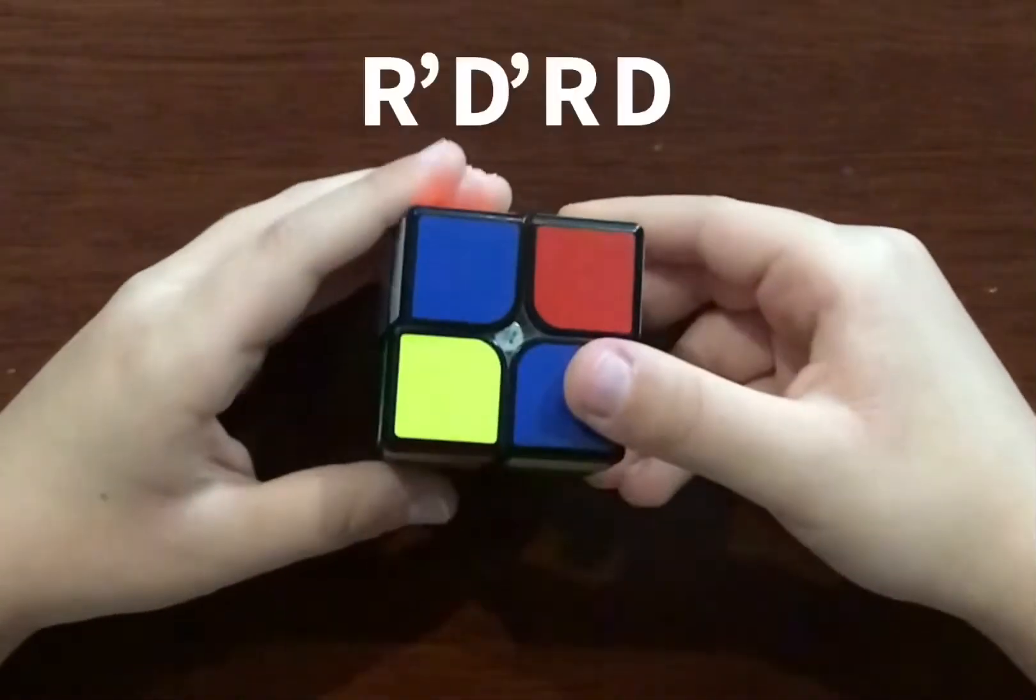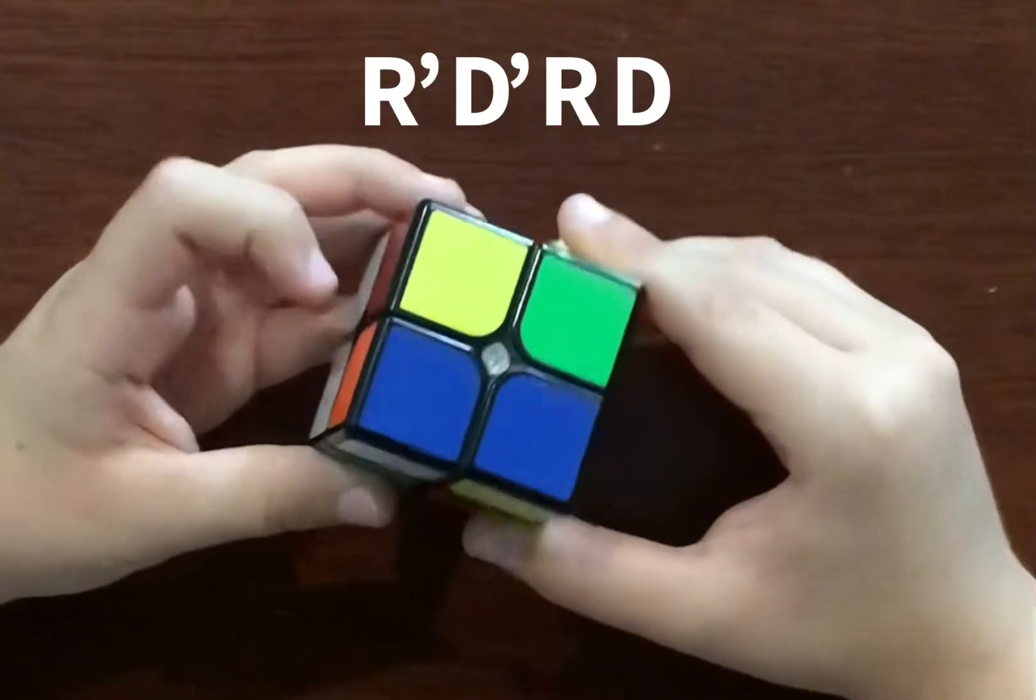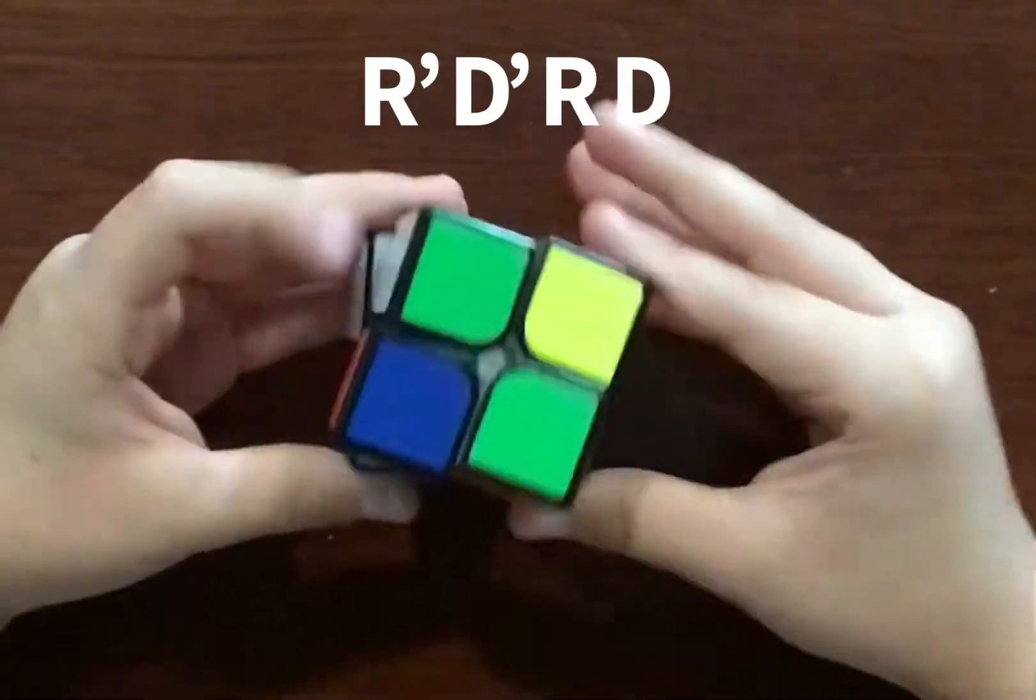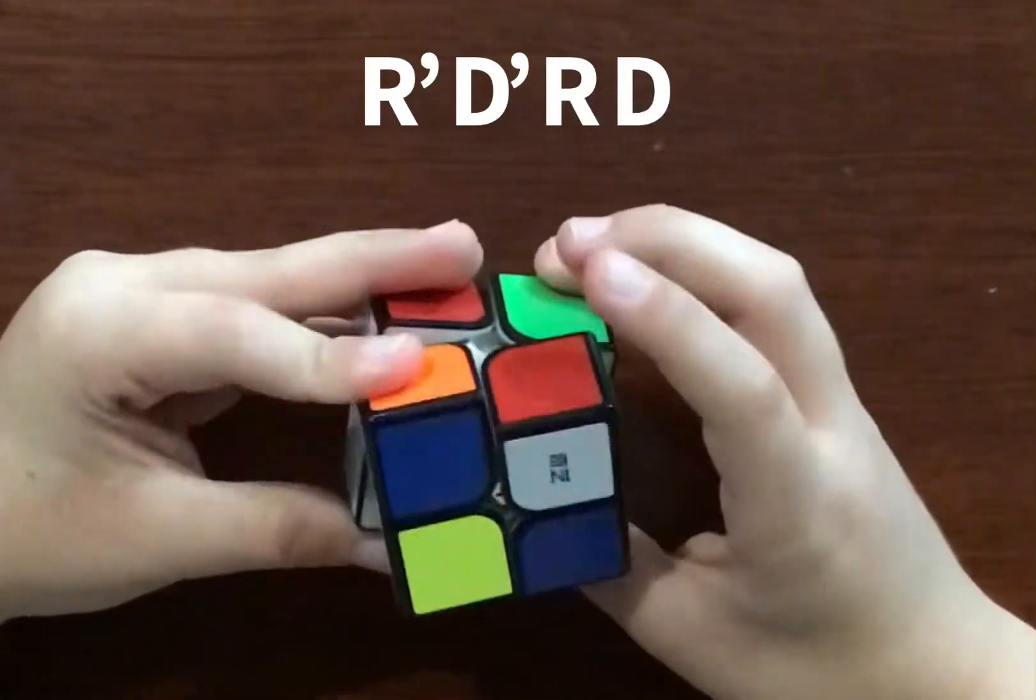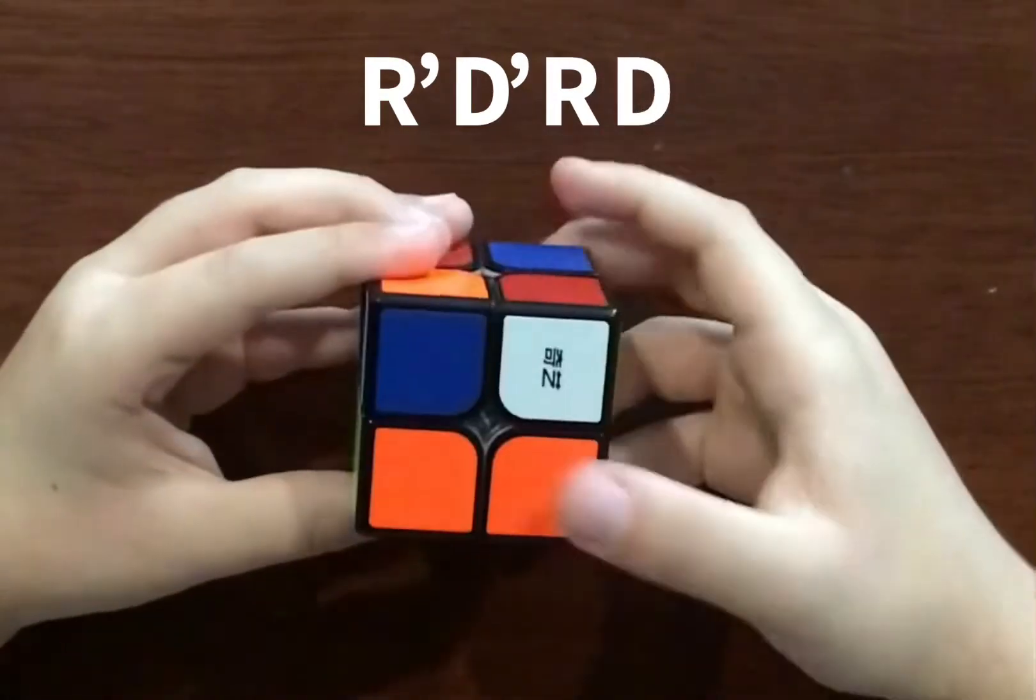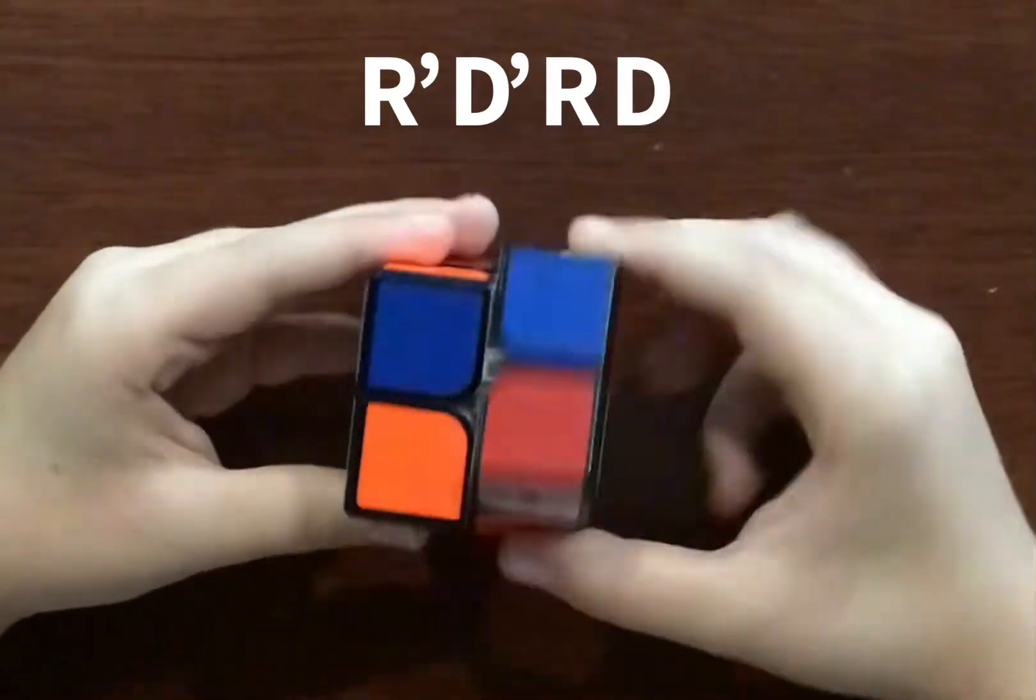And you should do this algorithm: R prime, D prime, R, D, R prime, D prime, R, D, R prime, D prime, R, D, D prime, R, D. And then when you finally find it's like this, you do R2, U prime, R, U.